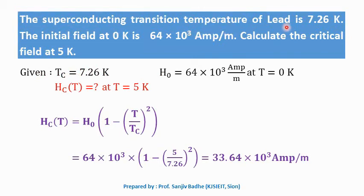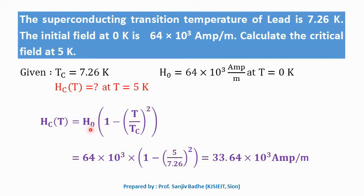Problem 2: The superconducting transition temperature of lead is 7.26 K. The critical field at 0 K is 64 × 10³ ampere per meter. Calculate the critical field at 5 K. Using Hc(T) = H0 [1 minus (T/Tc)²], with H0 = 64 × 10³ A/m, T = 5 K, Tc = 7.26 K, we calculate the critical field at 5 K as 33.64 × 10³ ampere per meter.